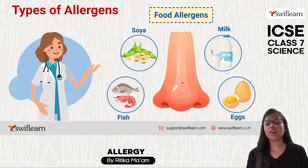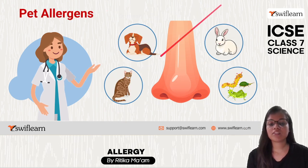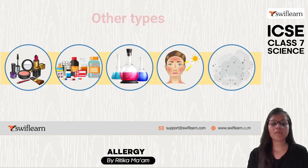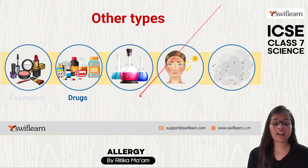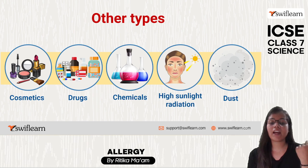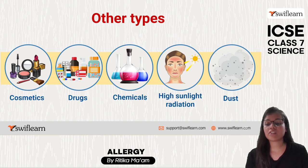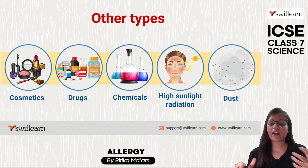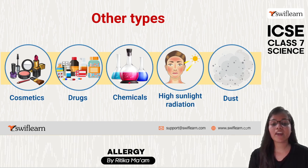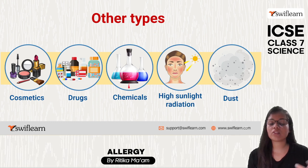There are also food allergens — some people are allergic to milk, eggs, meat, fish, or soya. Pet allergens include domestic dogs, cats, rabbits, and insects. Other allergens include drugs, cosmetics, chemicals, and high sunlight radiation. When someone uncomfortable with sunlight goes out, they may get rashes or bumps. Some people also get redness or rashes when applying cosmetics, which is also a sign of allergy.